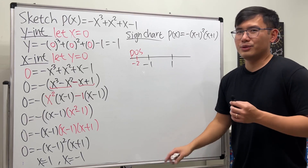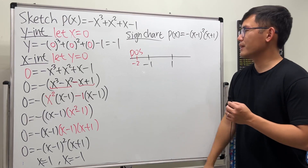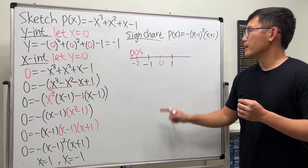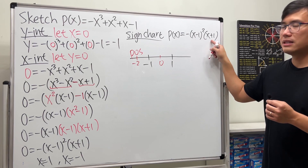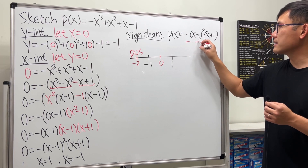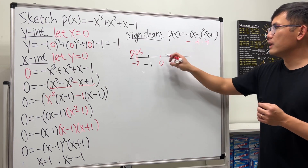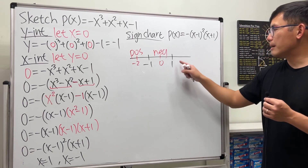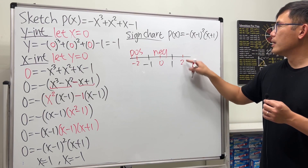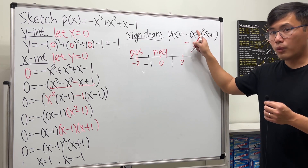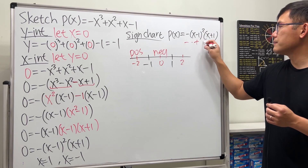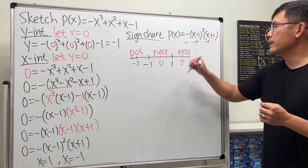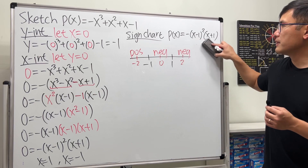Pick a number between -1 and 1, say 0. That gives negative × positive × positive, which is negative. Then pick a number greater than 1, say 2. That gives negative × positive × positive, which is also negative. So the sign chart shows: positive, negative, negative across the three regions.